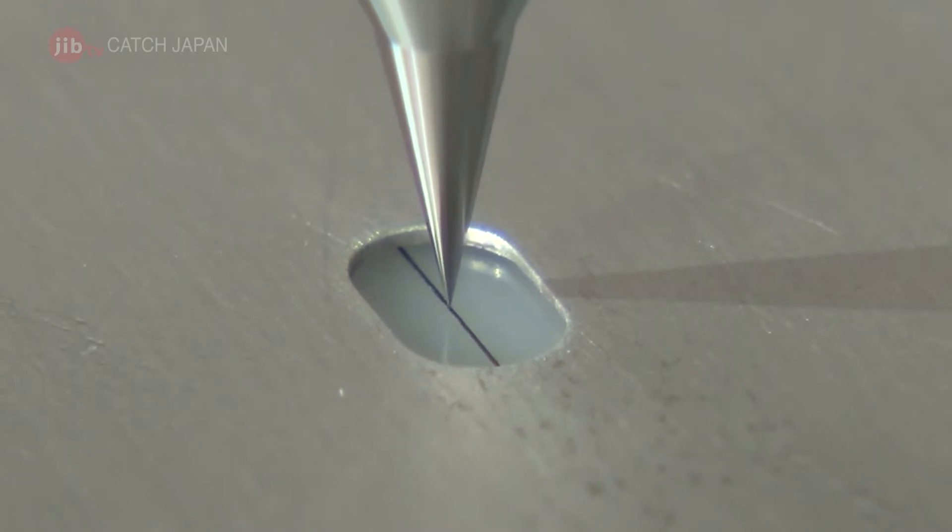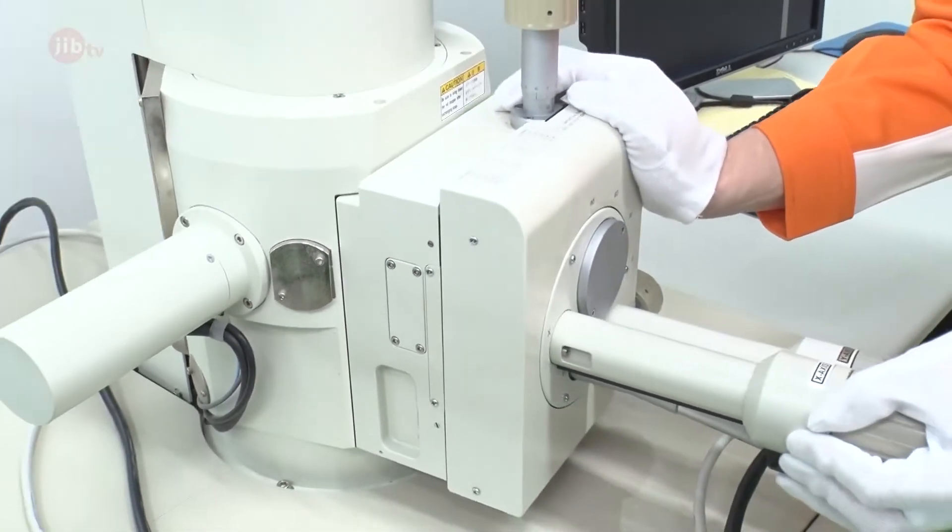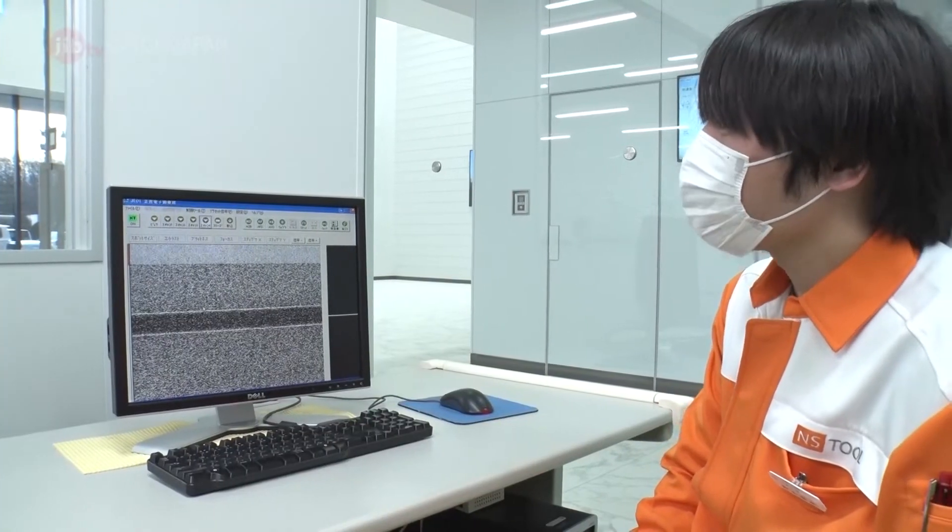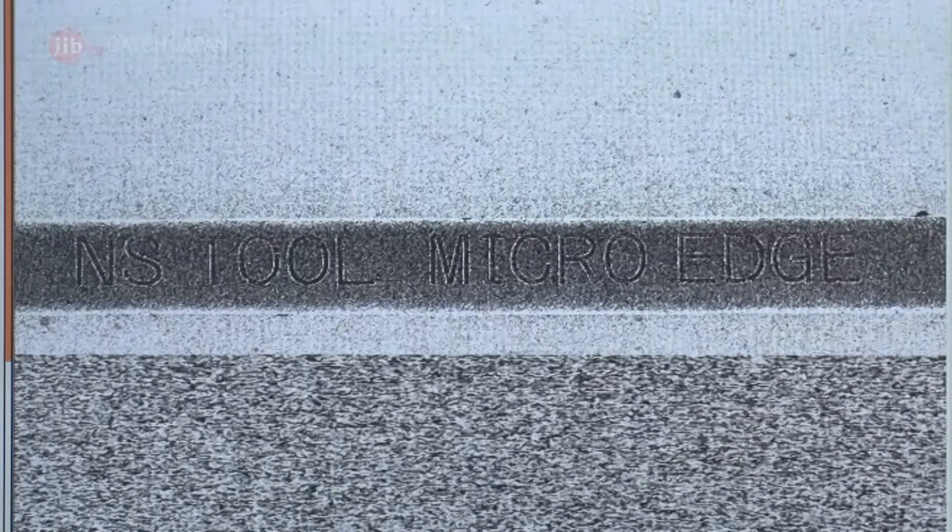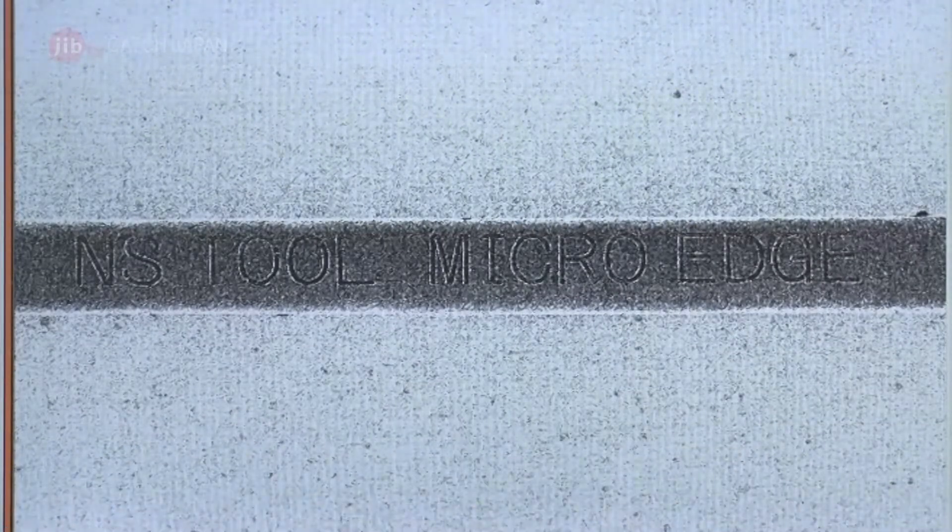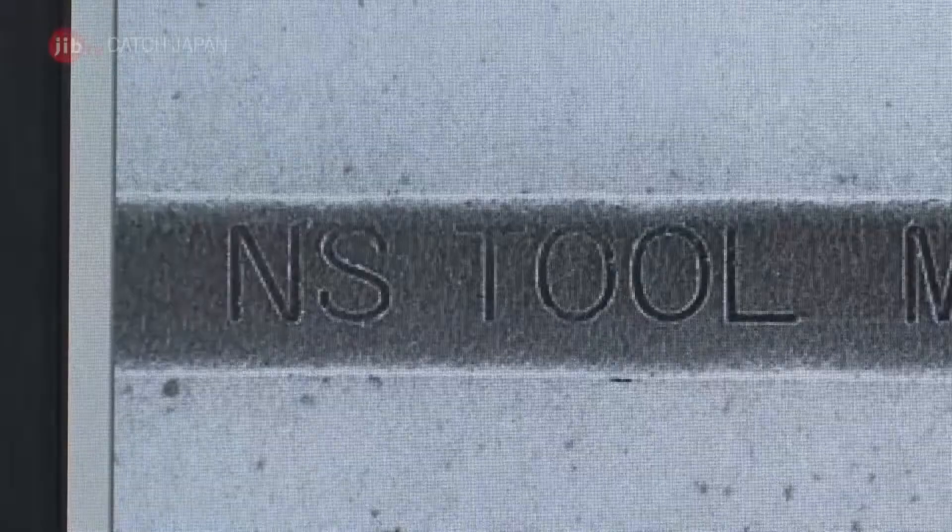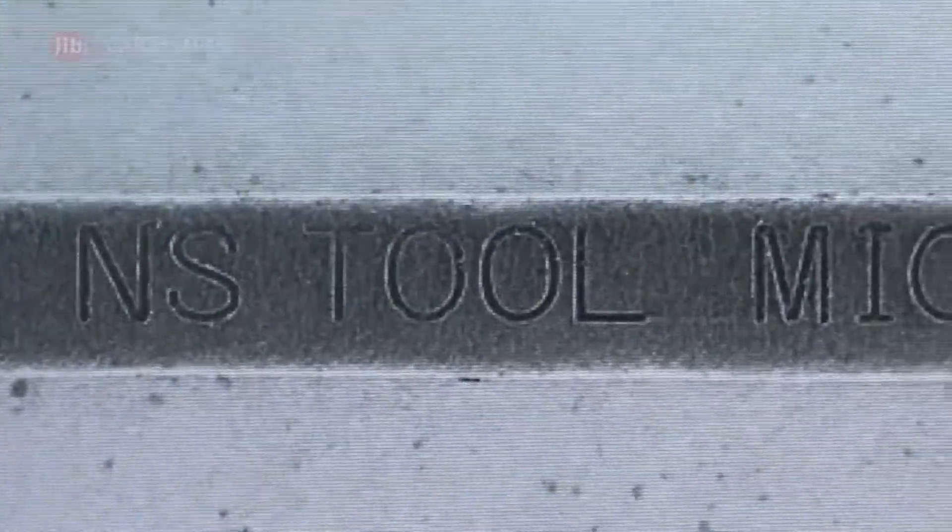The process can't be seen with the naked eye. But when put under an electron microscope, you can see that it's written tiny words onto the hair's surface. Even each letter is precisely etched.